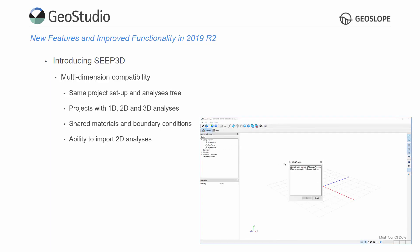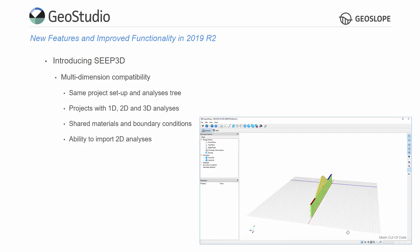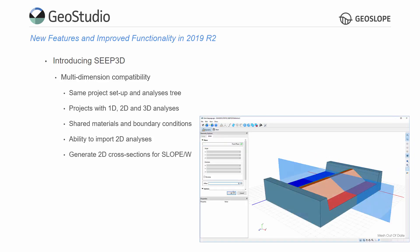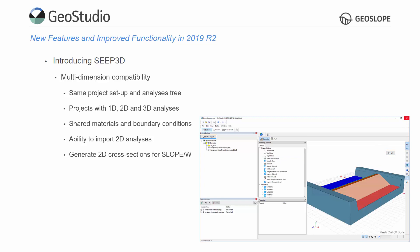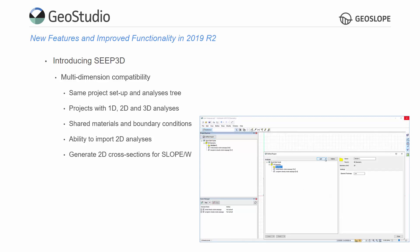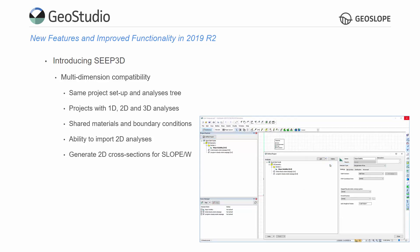A two-dimensional analysis may be imported into SEEP3D. Material and boundary condition assignments from the 2D analysis are automatically applied in 3D. Finally, SEEP3D allows for the creation of cross-sections that can be used for two-dimensional analyses. For example, the results from a 3D seepage analysis can be used in SLOPE/W to analyze stability on multiple cross-sections.